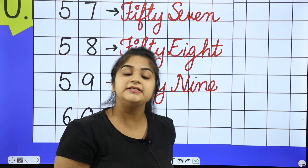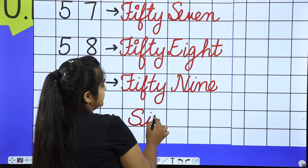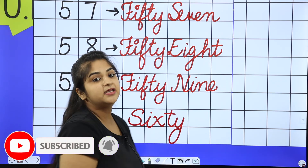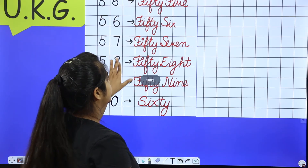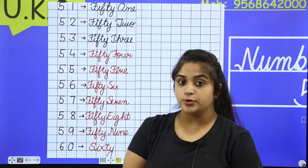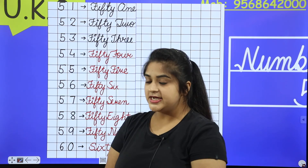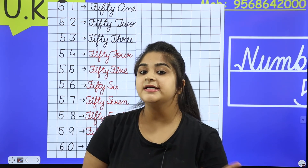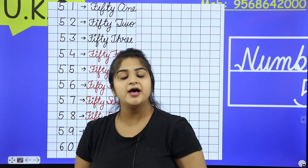And the last number — 60. So your homework is: 51 to 60 number names, complete them in your notebook. It is very easy because we already know the spelling of 50. For 60 we learned new — S-I-X, and we add T-Y to make 60.